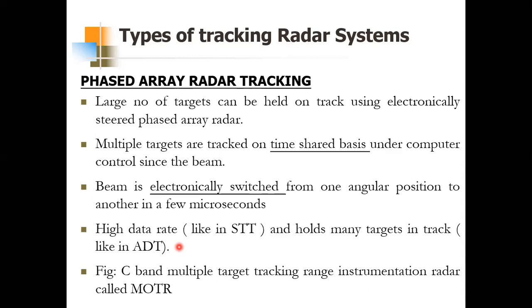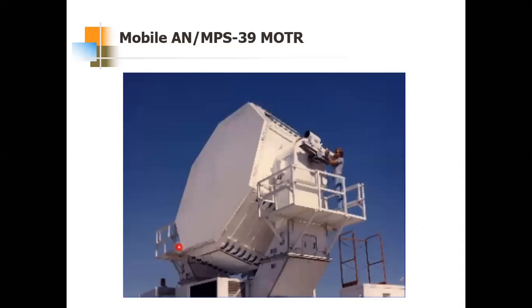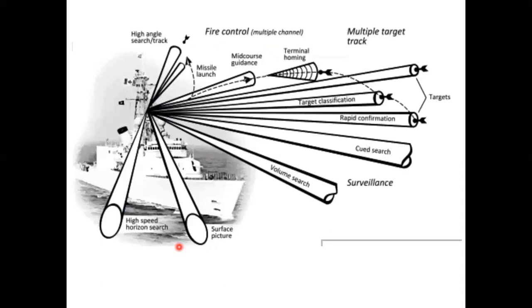An example of phased array radar tracking is the ANMPS-20 MOTR — Multiple Object Tracking Range Instrumentation Radar. The electronically steerable lens array antenna is 20 feet in diameter and can simultaneously track up to 10 objects. As shown in the diagram, the ship-based radar can simultaneously perform high-speed horizon search, surface picture, missile launch detection, and track multiple targets — both desired and other types.